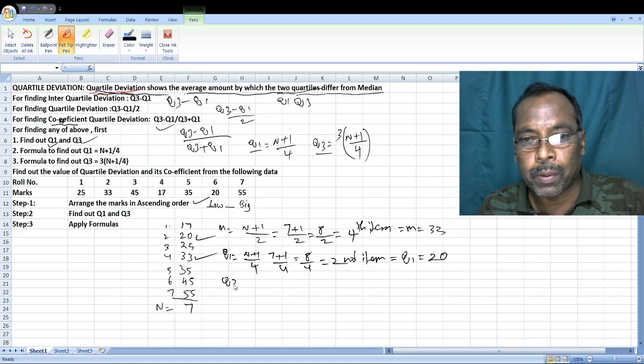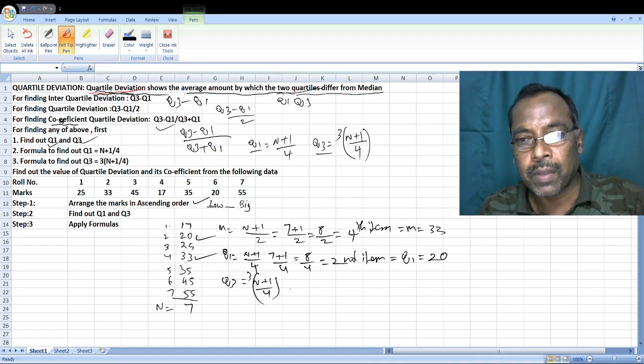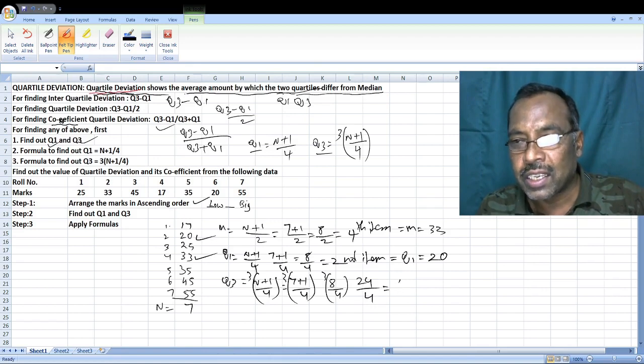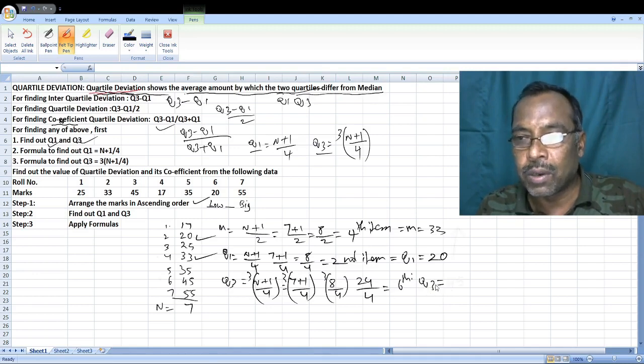Next, find Q3. Q3 is equal to n plus 1 by 4 into 3. That comes to 7 plus 1 by 4 into 3, which is 8 by 4 into 3. 8 into 3 is 24, 24 by 4 equals 6. Q3 is the sixth item, which is 45.